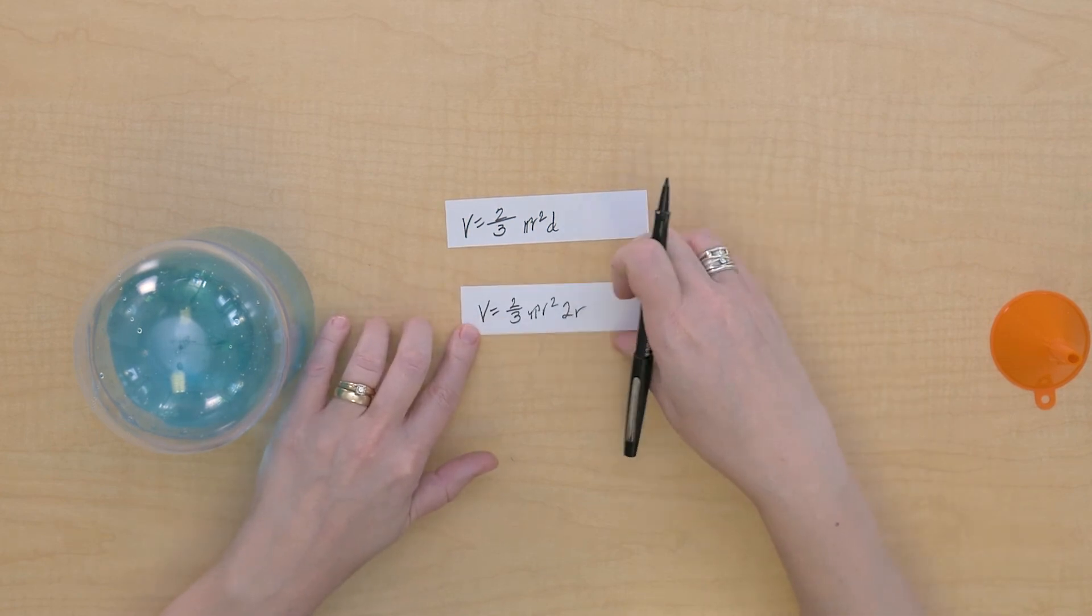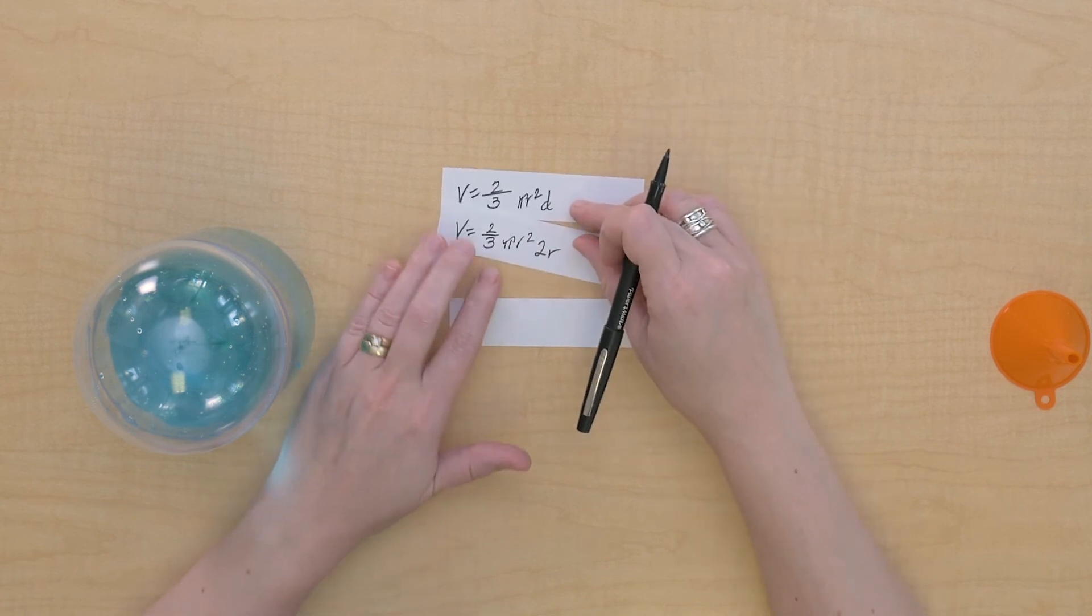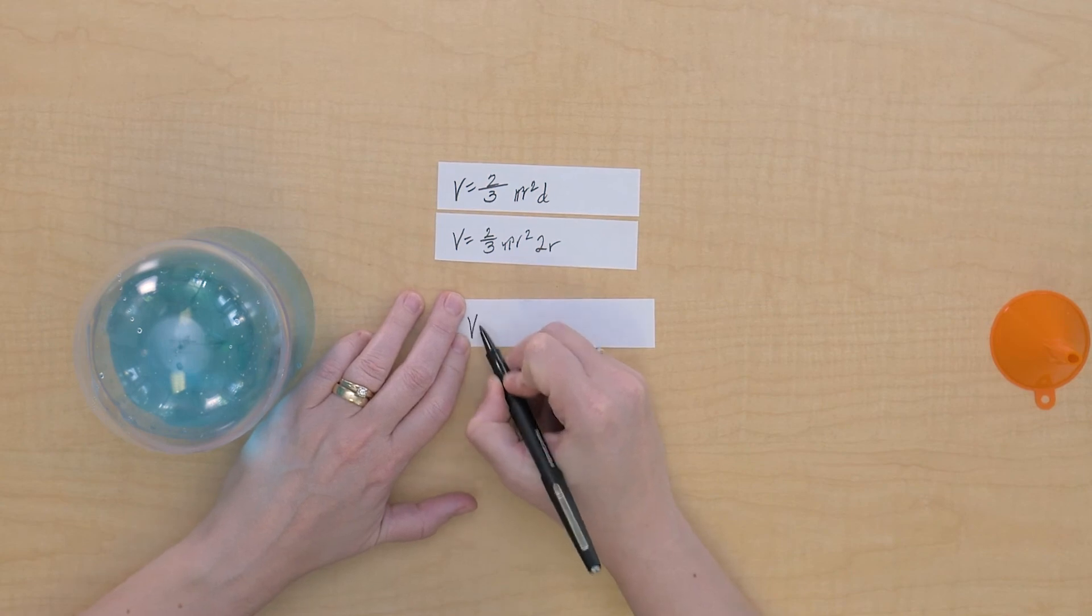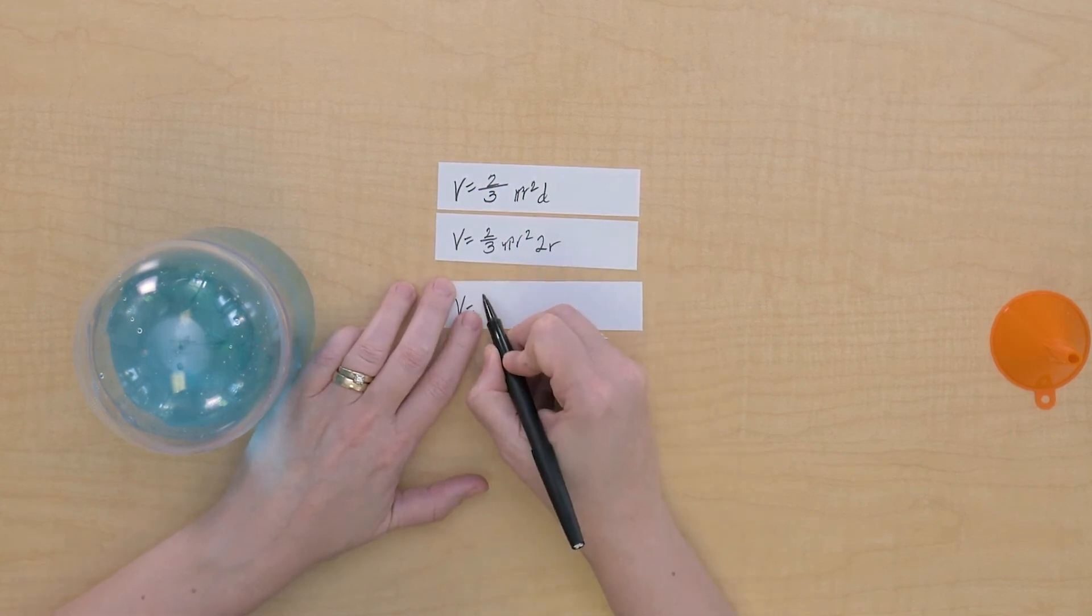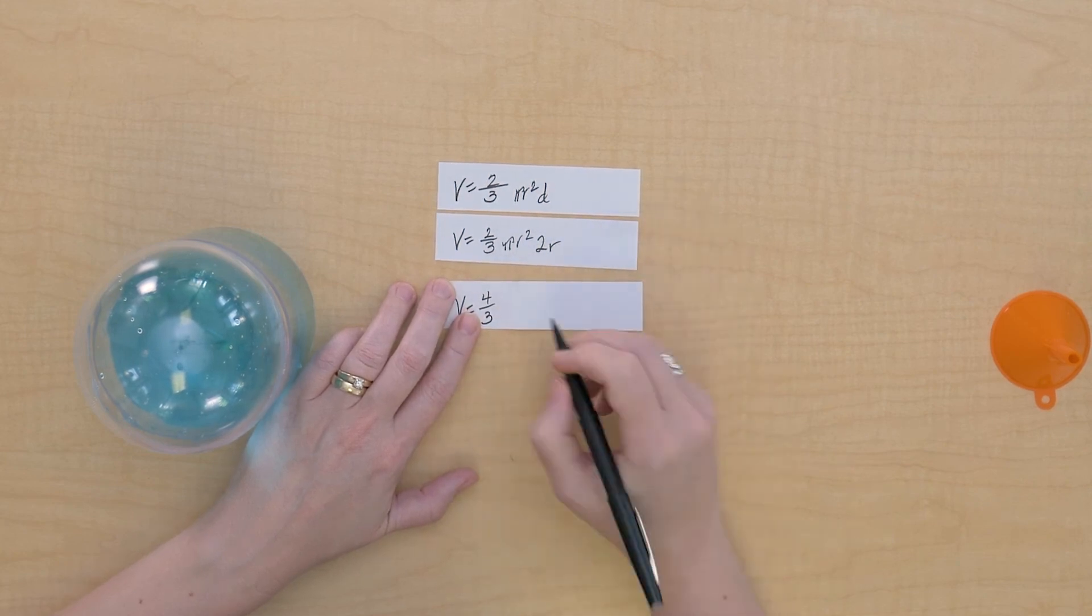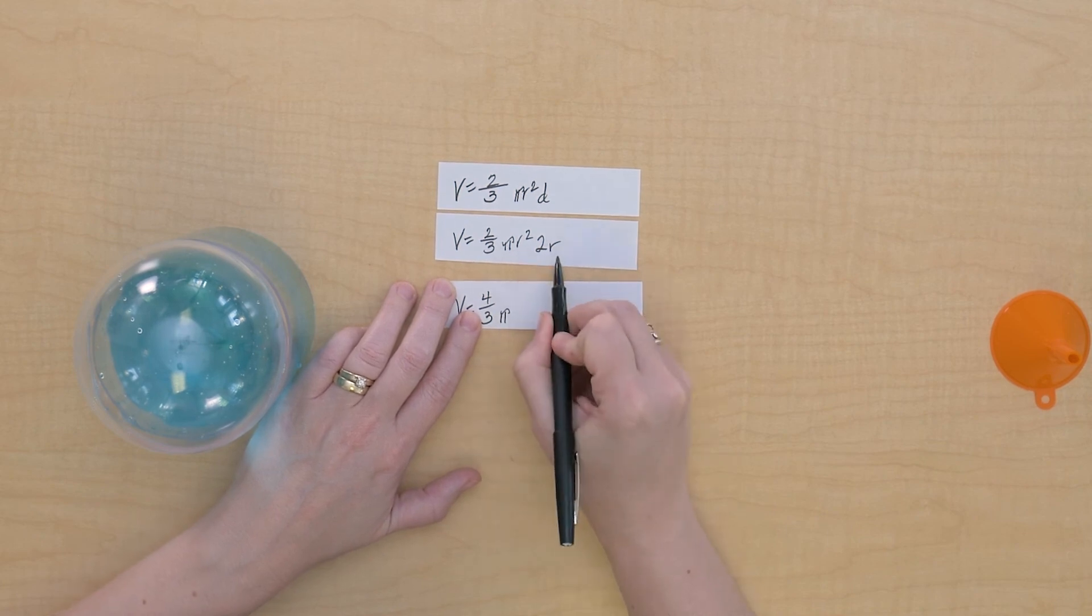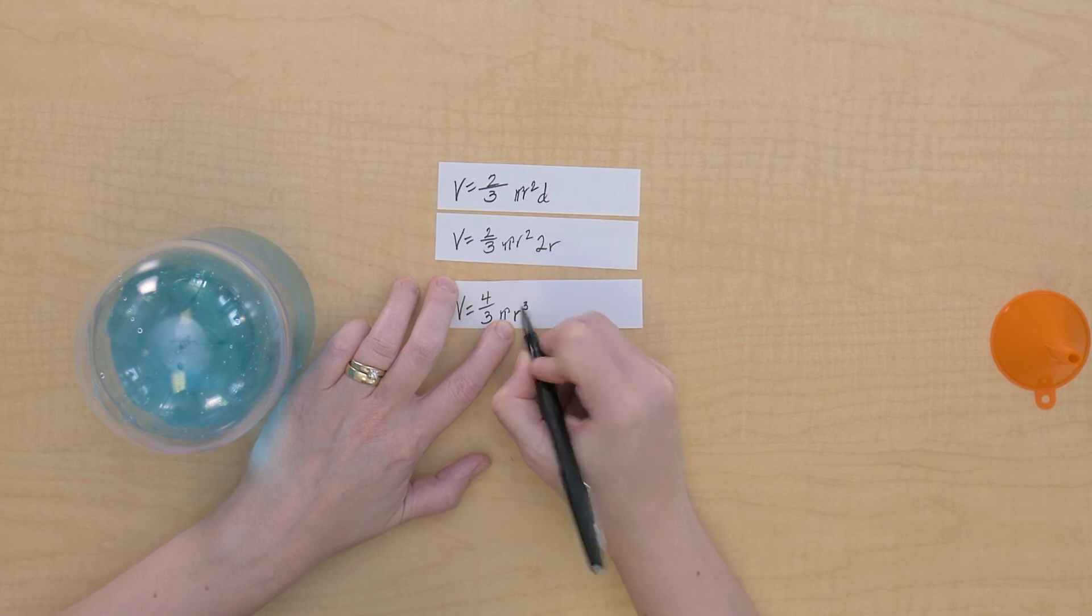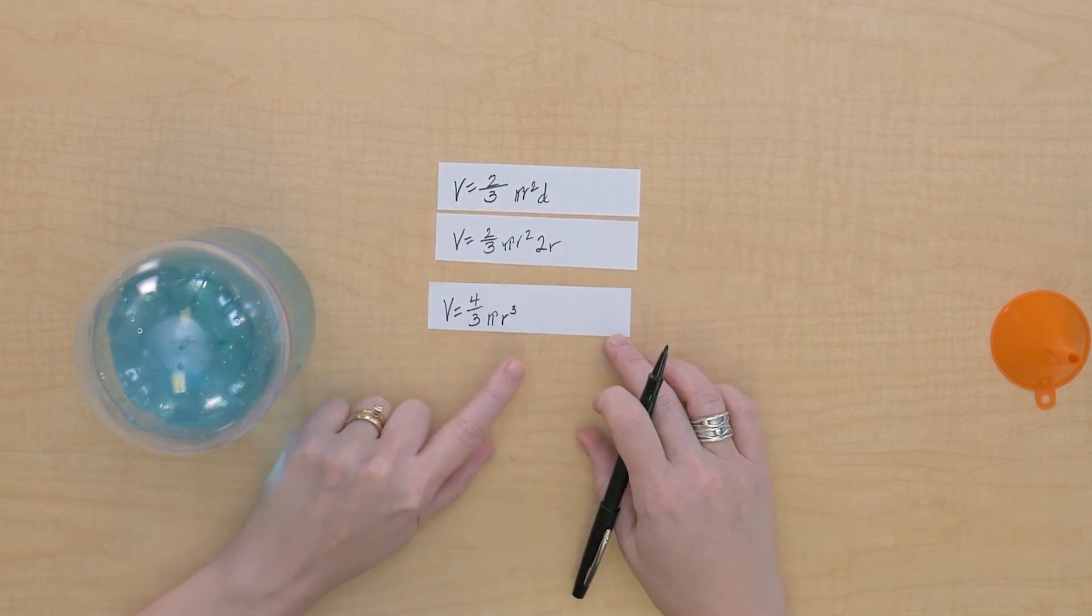Okay. So we've got one more simplification we can do here. I'm going to get all our number values together. So the volume of a sphere equals four-thirds, so I can simplify that, pi, and then r squared times r is going to be r cubed. So the volume of a sphere equals four-thirds pi r cubed.